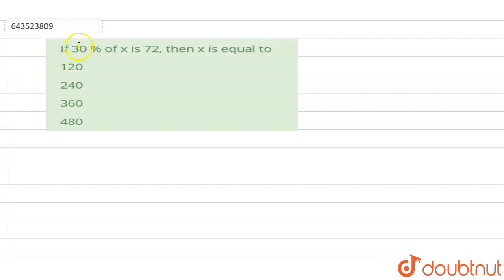Hello student. In this problem, it is given that if 30 percent of x is 72, then x is equal to what? Four options are given, and we have to find the correct one.